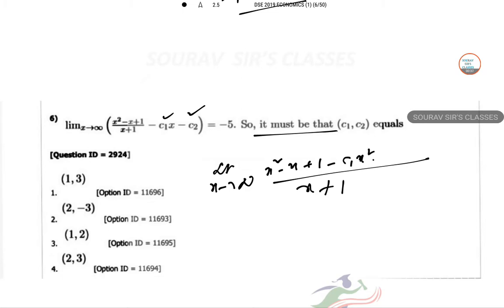So x plus 1 is this. So C1 x square, C1 x, C2 x minus C2 and that is equal to minus 5. So if this is to be true, so the coefficient of x square in the numerator must be 0 and that of x should be minus 1.